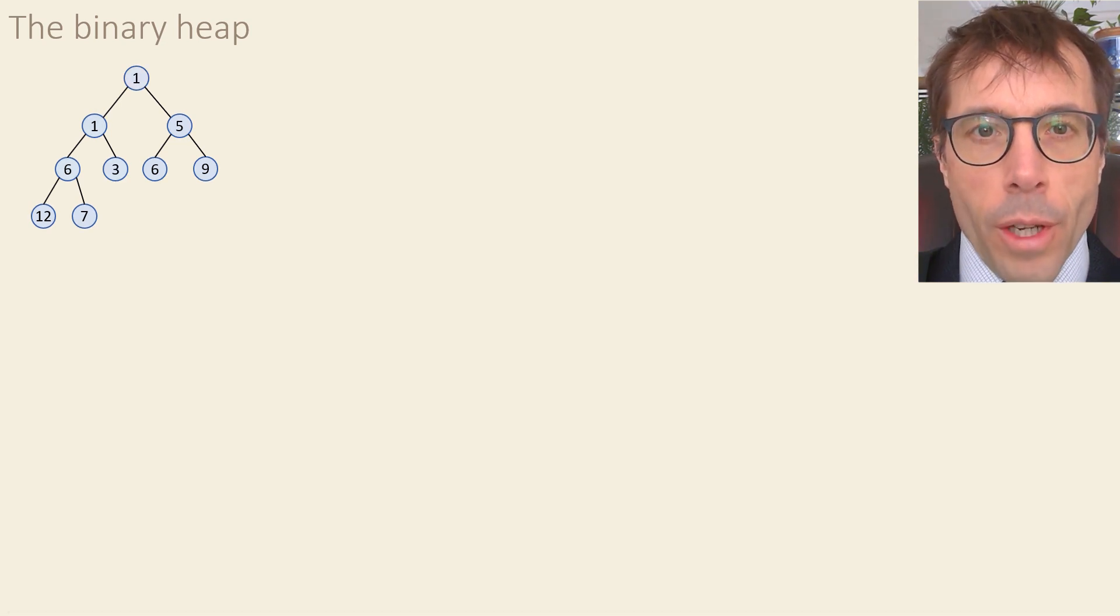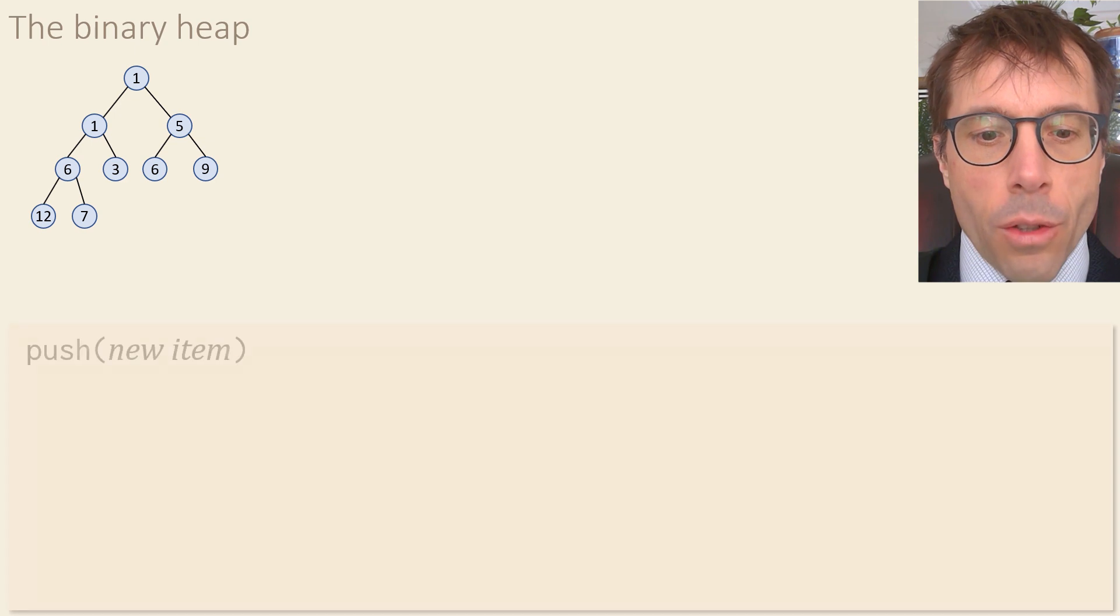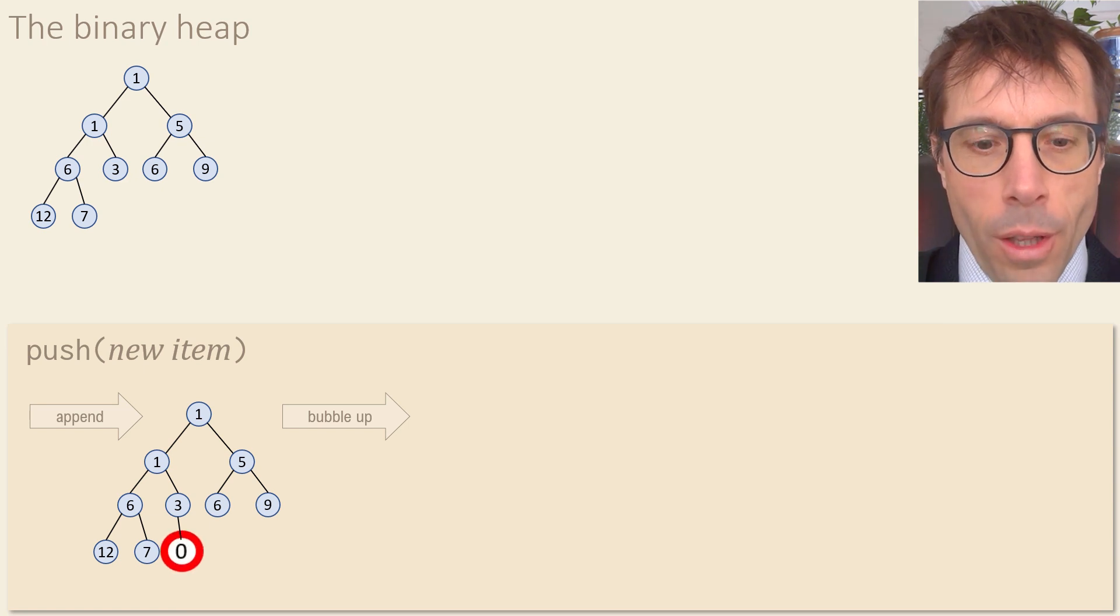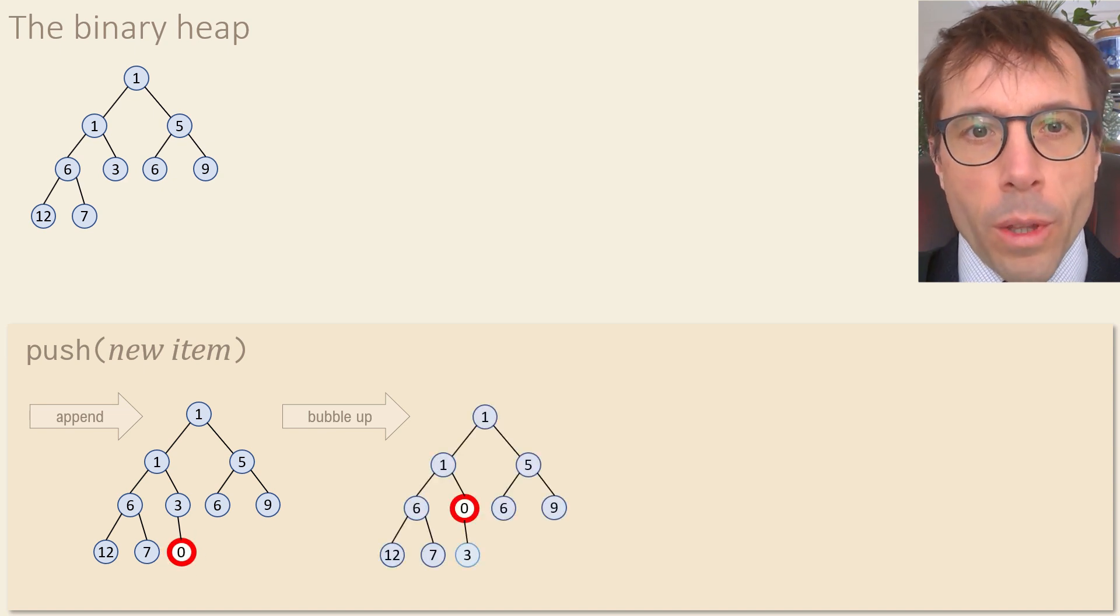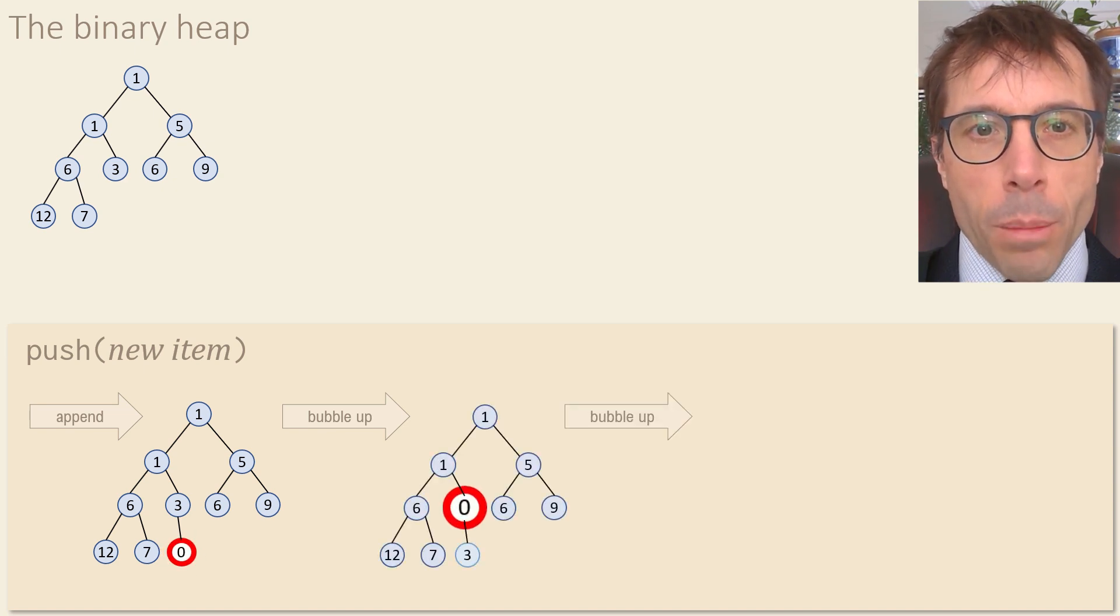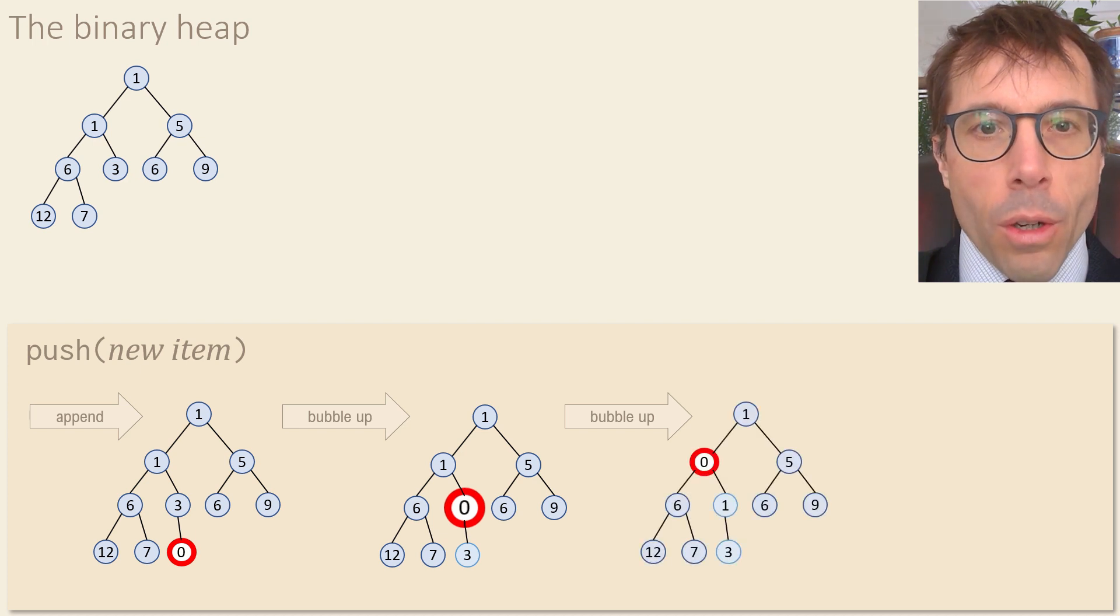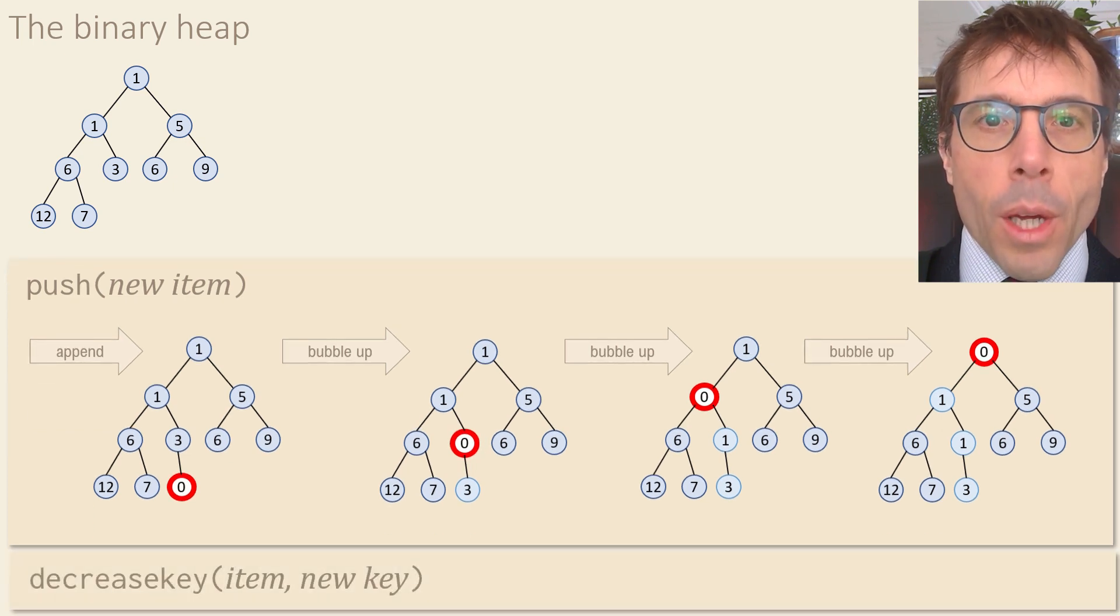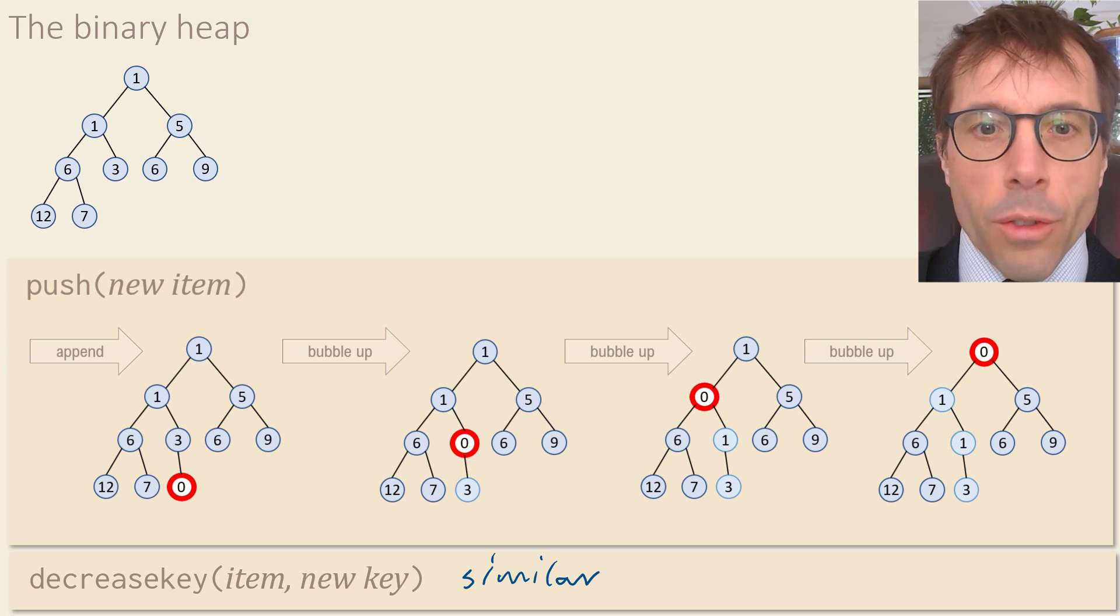Next, let's look at how to push a new item into the heap. We'll just bung it on at the end. But this is no good. It's a heap violation. This item is smaller than its parent. To fix the violation, we can bubble it up the tree, swapping it with its parent, and keep bubbling up as far as it needs to go until we're back to a nice heap. Decrease key is basically the same. You just decrease the key you're interested in, then bubble it up as far as it needs to go.